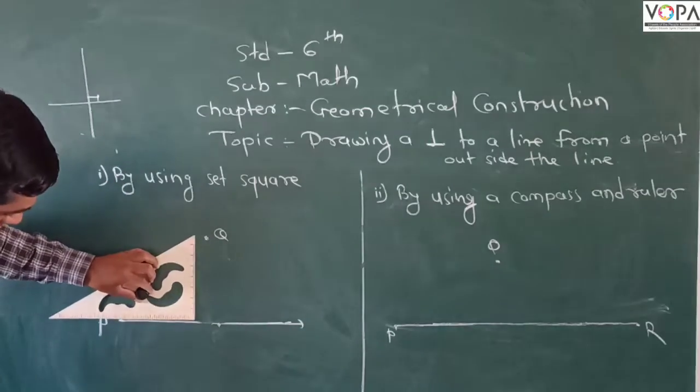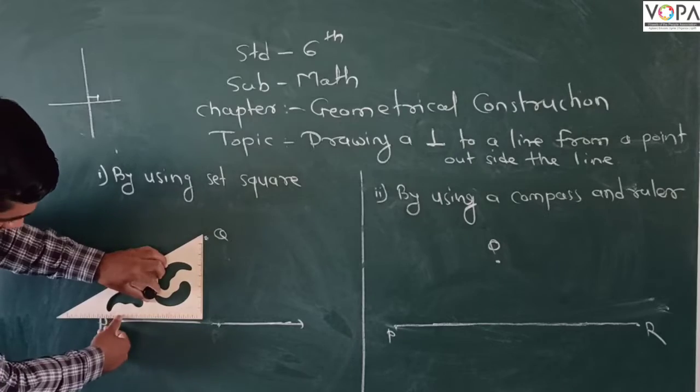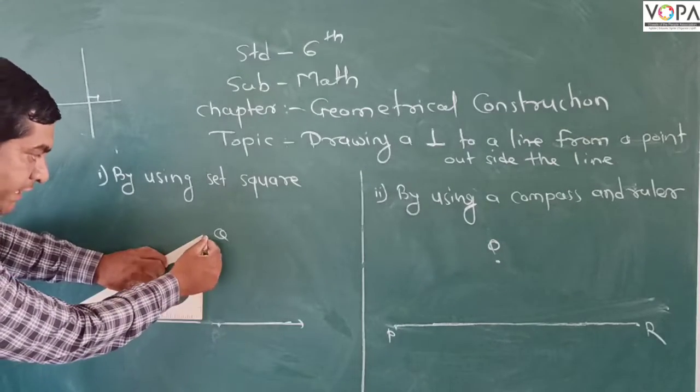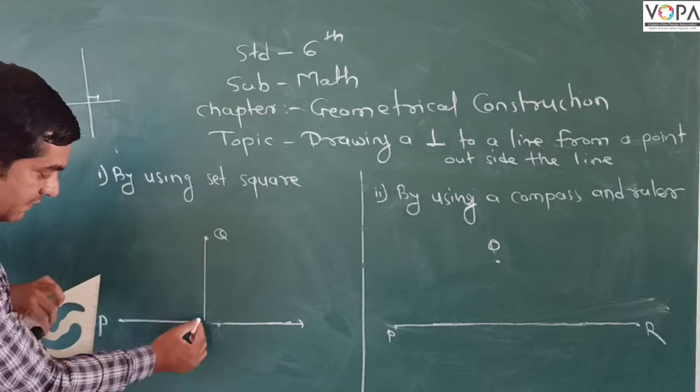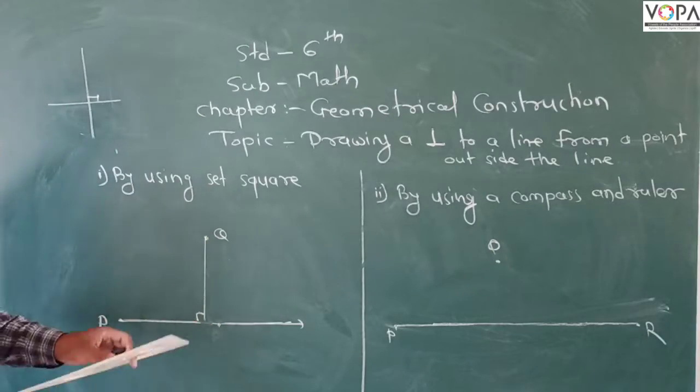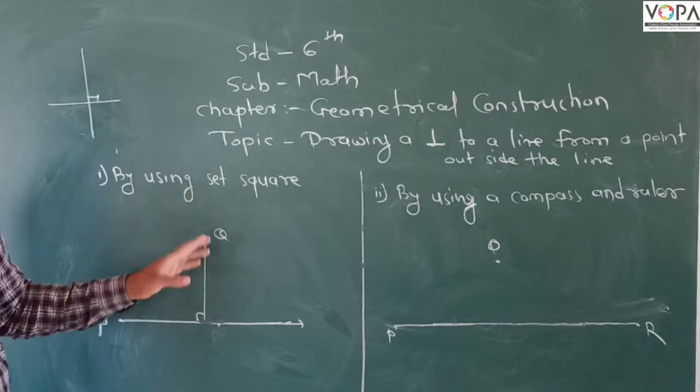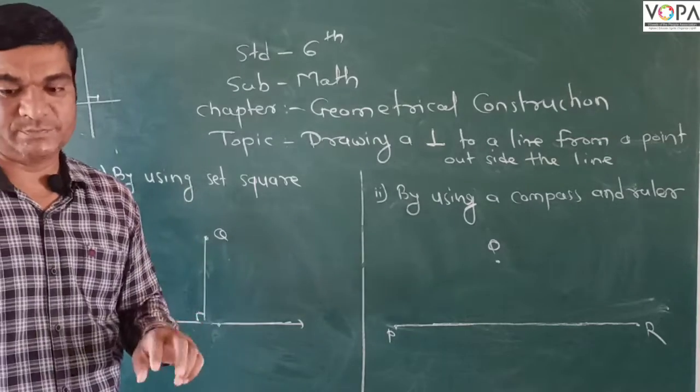Like this way. We place it on the line P, and here we make an angle of 90 degrees. If we join this point to the line, we make an angle of 90 degrees. So it is perpendicular to the line P using the set square. This is the first method.